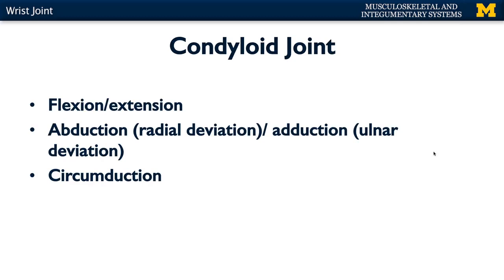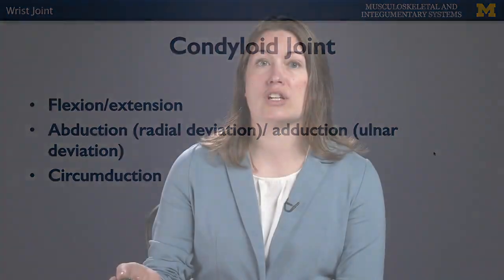The radiocarpal joint is an example of a chondyloid joint. We don't talk about chondyloid joints very much because there aren't really that many in the body, but this is a nice example of one. In a chondyloid joint, you have the capability of flexion and extension, abduction — which we also refer to as radial deviation, moving on the radial side of the wrist — and adduction, moving on the ulnar side of the wrist. Because you have flexion, extension, abduction, and adduction, you're capable of circumduction, that complex combination of those four movements.